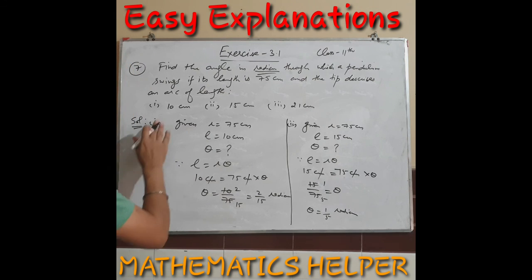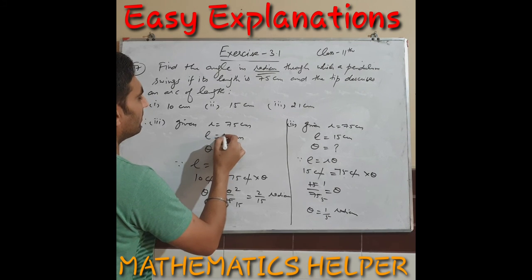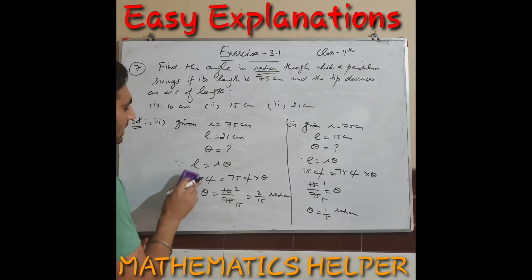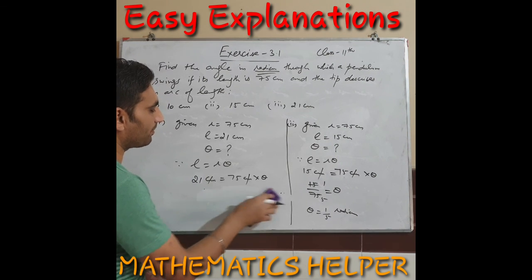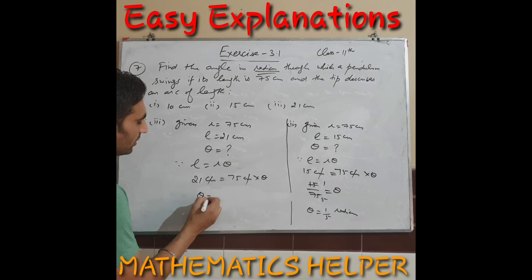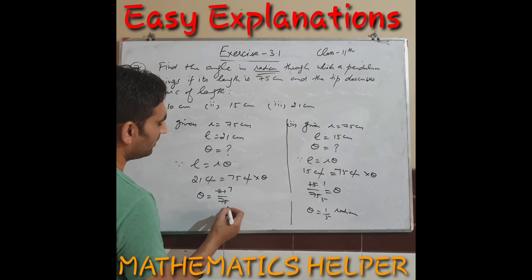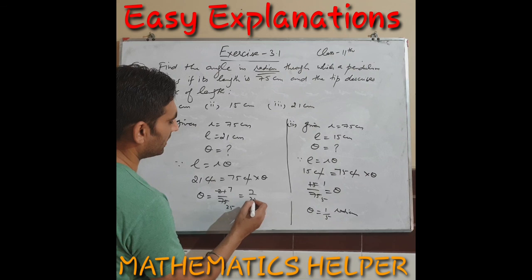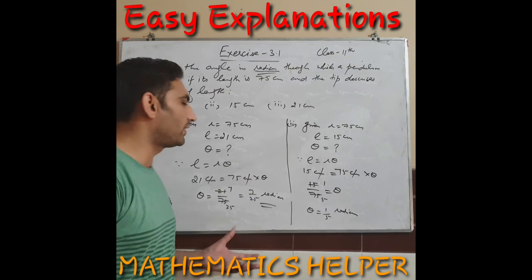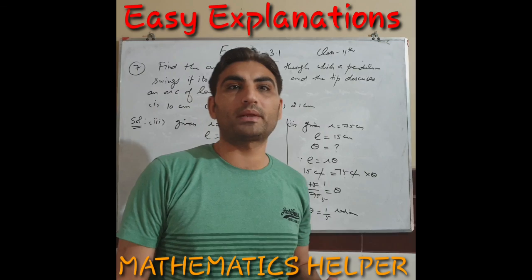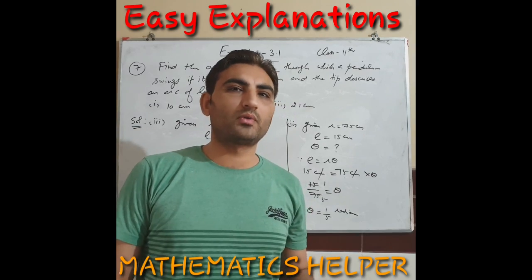Part three: change the arc length to 21 cm. Using l = rθ: θ = 21/75. Simplifying: 21 and 75 share a factor of 3, giving 7/25. So θ = 7/25 radian. This completes question seven. Don't forget to subscribe the channel and press the bell icon for latest notifications.